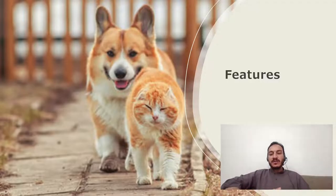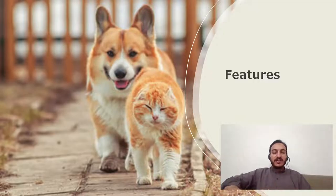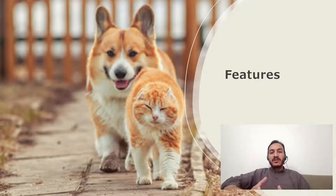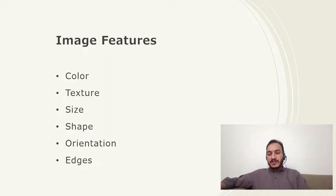Your brain will try to recognize those animals based on some features. Those features can be the size of the animals, the shape of the ears, or the shape of the eyes. There can be single features or a combination of features using which your brain will be able to recognize the animals. Different data types can have different features.